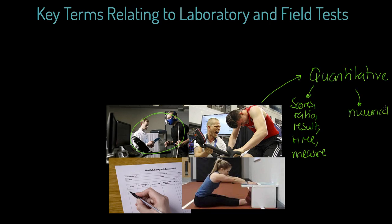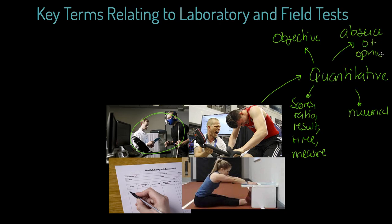Anything that comes in numerical format is what we refer to as quantitative data. One of the words we use to describe this kind of data is objective. Another way of describing objective is that there is an absence of opinion. Think about our direct gas analysis — whatever the score is, nobody cares about anyone's opinion of that score. We're interested in the score itself to inform training or recovery. There's no opinion, interpretation, or prediction — these are objective numerical scores.